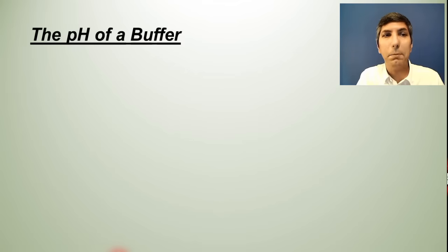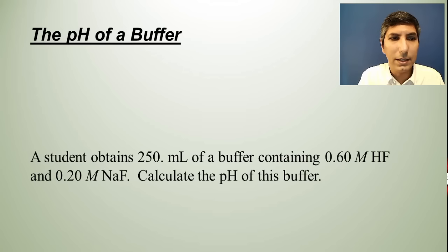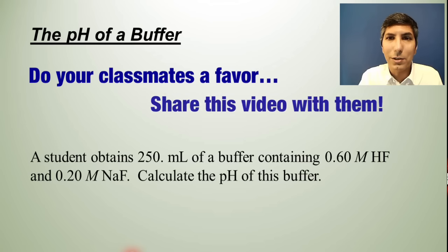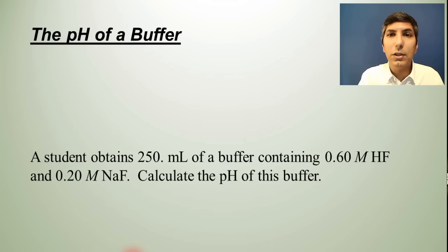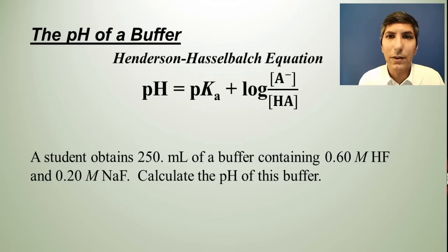And let's move on to section 8.9, which is about how to calculate the pH of a buffer. So here's an example. We may have a problem like this, where it says a student obtains 250 milliliters of a buffer containing 0.60 molar hydrofluoric acid and 0.20 molar sodium fluoride. Calculate the pH of this buffer. Now, there's an equation that we use for this. I'm not going to worry about deriving the equation for you, but this is called the Henderson-Hasselbalch equation.